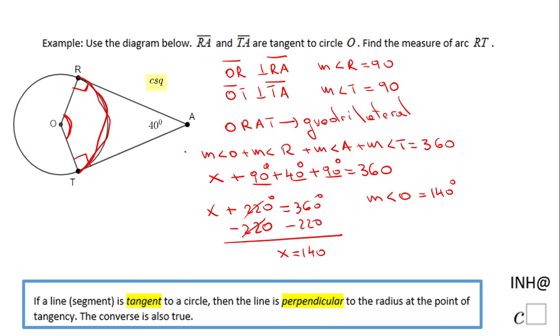The measure of angle O will be equal to the measure of arc RT. So the measure of arc RT would be nothing else than 140 degrees.